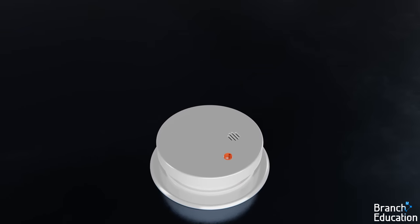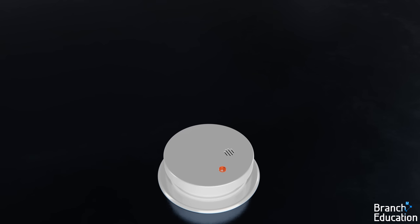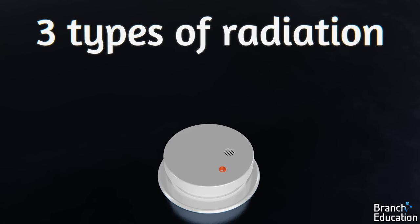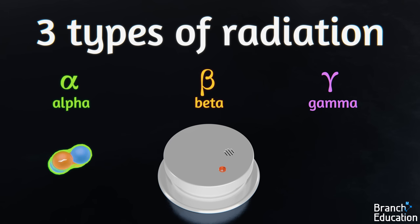Alpha particles are used in this application because of the three types of radiation—alpha, beta, and gamma—alpha particles have the largest ionizing potential. In other words, they produce the greatest number of ions and a steady flow of current in the ionization chamber when no smoke is present.